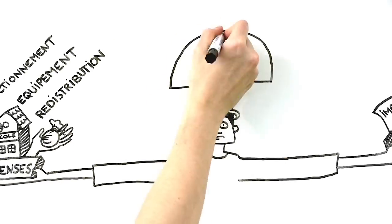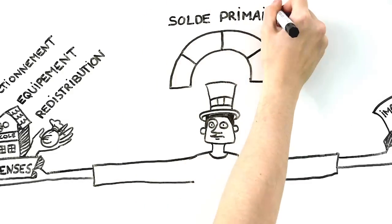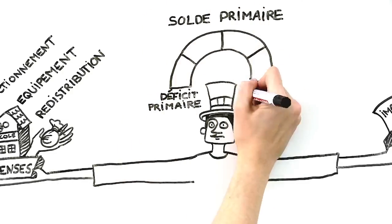The difference between a country's income and expenses is called the primary balance, which can be a surplus or deficit.